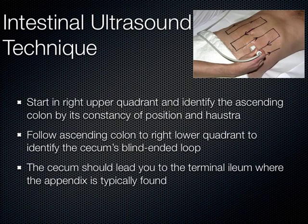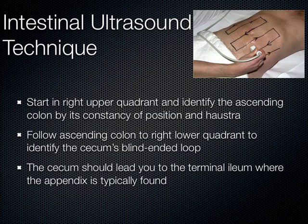We use a technique called mowing the lawn, where you start in the right upper quadrant. You can see the ascending colon there — it's always in the right upper quadrant and it has haustra. You guys have had this in anatomy: haustra versus the plicae circularis that you see with the small bowel. You can identify that sometimes on ultrasound when it's filled with fluid. If there's air in the colon and small bowel, it's very difficult to see.